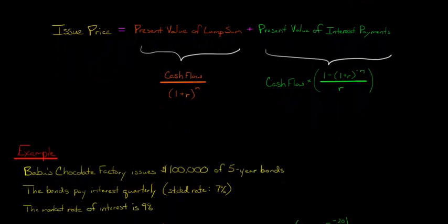So let's say that we have a company called Babu's Chocolate Factory that issues $100,000 of five-year bonds, and those bonds have a stated interest rate of 7%.